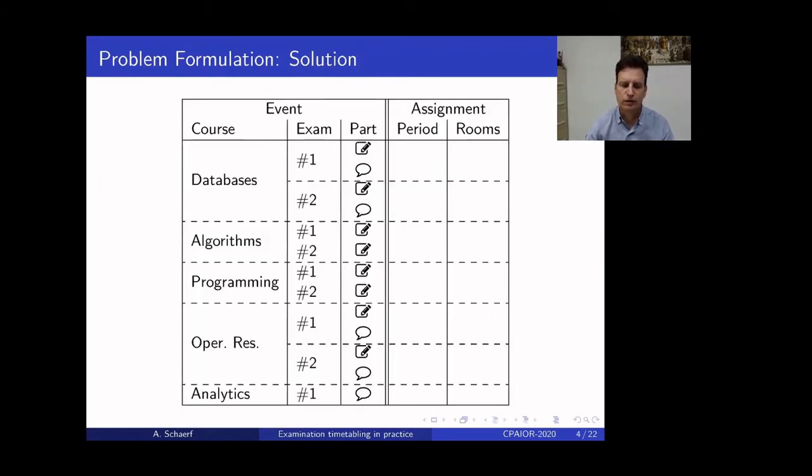Okay, so when we want to find the solution, we have to explode the courses into single events. So, for example, the database has four events because it has two exams, each one composed by two parts, and others have other combinations. So, this is a solution. So, for example, the written part of the first exam database is given in period number two, and it's assigned rooms A and B. So, each room endowment can be either nothing, which we call the dummy room, or a single room or a set of rooms.